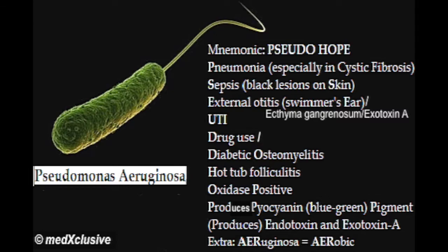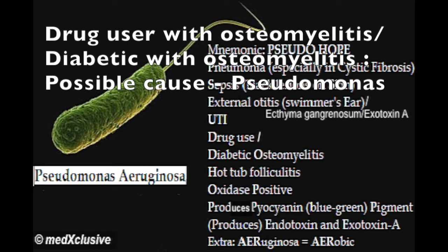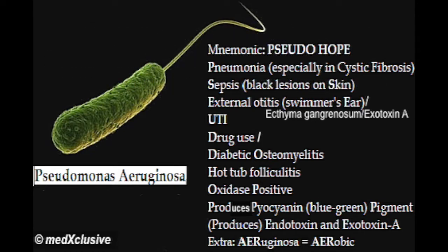D stands for drug use. It also causes diabetic osteomyelitis. H reminds us that it causes hot tub folliculitis. O — oxidase positive.